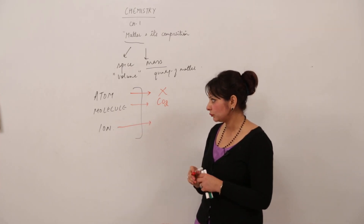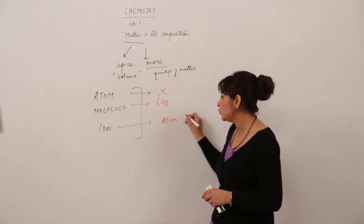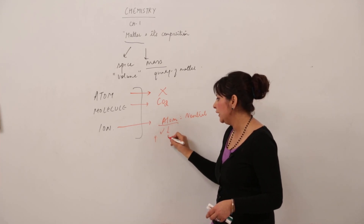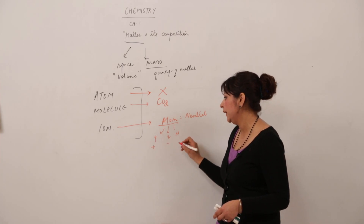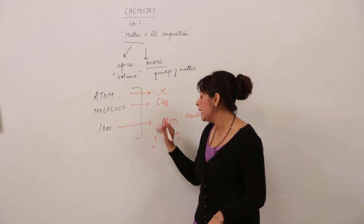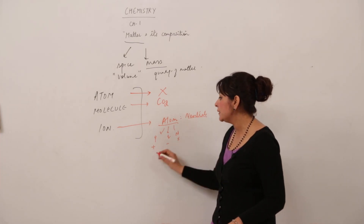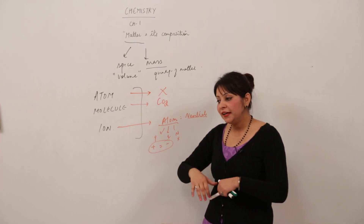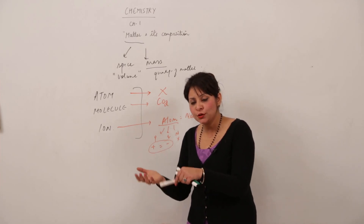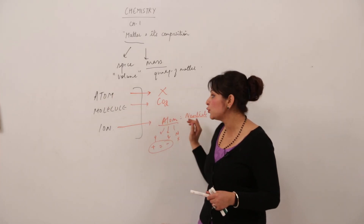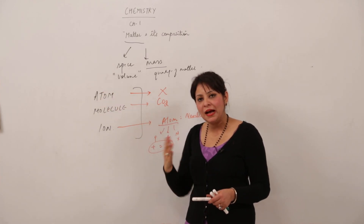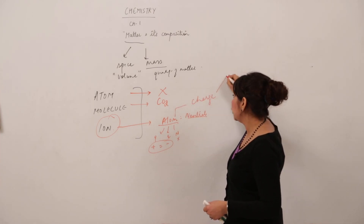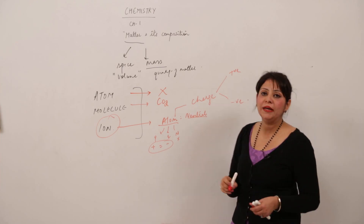What is an ion? An atom as a whole is actually neutral. The atom consists of three kinds of particles: proton (positively charged), electron (negatively charged), and neutron (no charge). An atom is electrically neutral because the number of positive charges equals the number of negative charges. But whenever electrons are lost or gained, it does not remain neutral — it becomes an ion. So an atom which bears a charge, whether positive or negative, is called an ion.